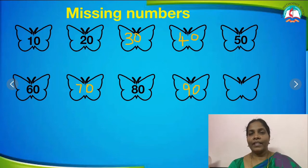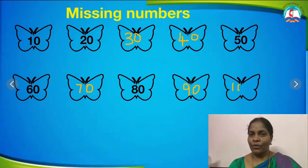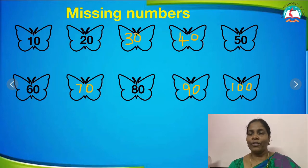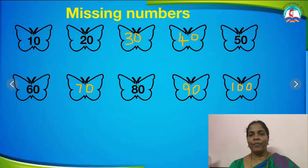How should I write 100, children? Yes — 1, 0, 0. Very good. You have to add two 0s. 1, 0, 0 is 100. Very good children.